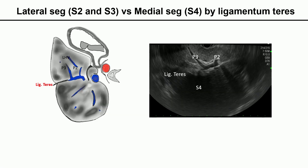With more clockwise rotation, P2 and P3 can be seen making the umbilical portion of the left portal vein, slightly pushing the probe inward along the liver surface. The hyperechoic line seen arising from the umbilical portion of the left portal vein is the ligamentum teres — the obliterated left umbilical vein — which separates S2 and S3 from S4.